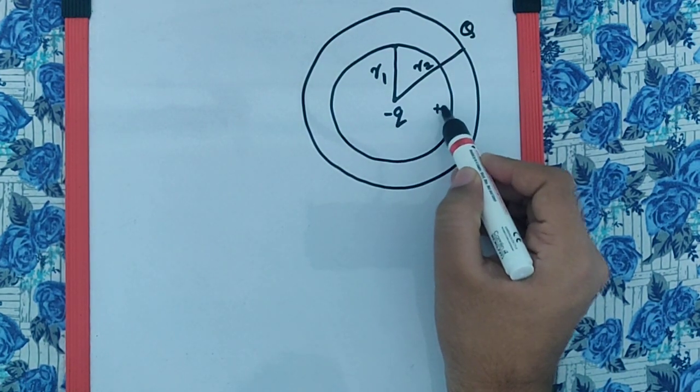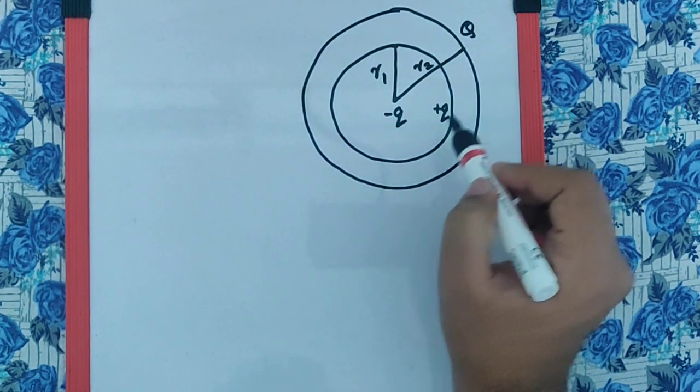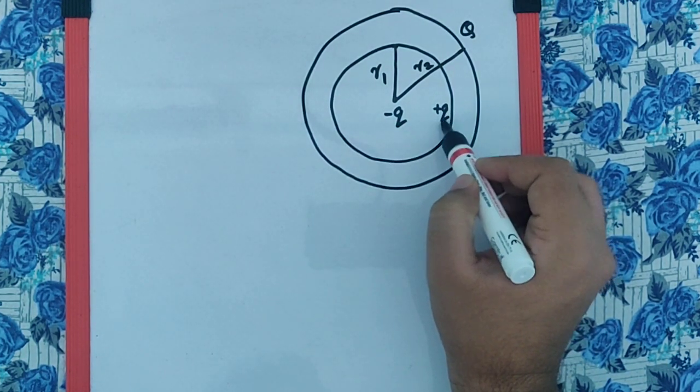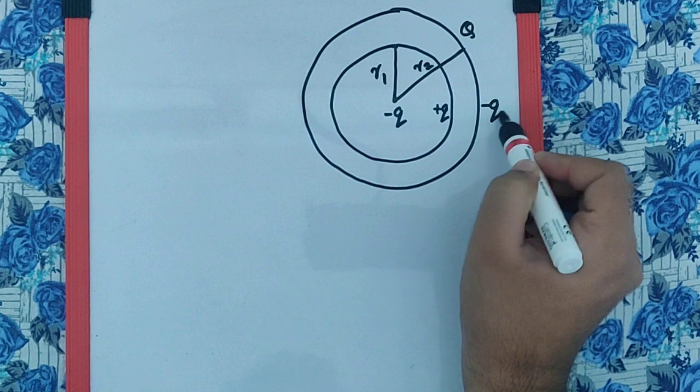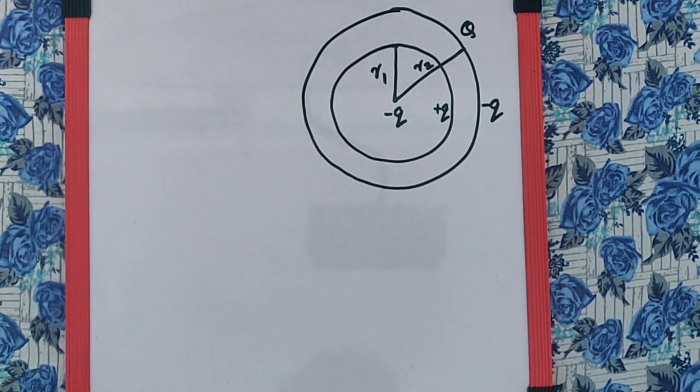This minus q will induce plus q over here by attracting it towards itself on all sides, and the plus q coming over here results in minus q on the outside because the net charge due to the induced charges should be zero.